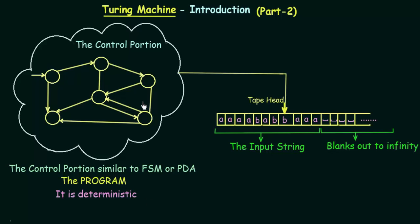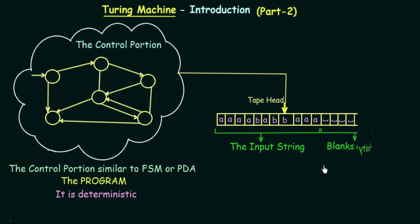The control portion and the tape are the two main parts of the Turing Machine. The tape consists of a tape head which represents the current position of the control, and then we have the input strings which are filled into these cells. Then we have the empty cells which are filled in by symbols known as the blank symbols. We do this because our tape is an infinite sequence, so we fill empty cells with a special blank symbol which goes out to infinity.